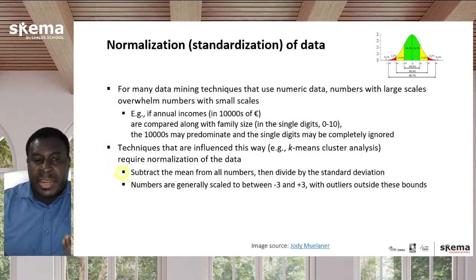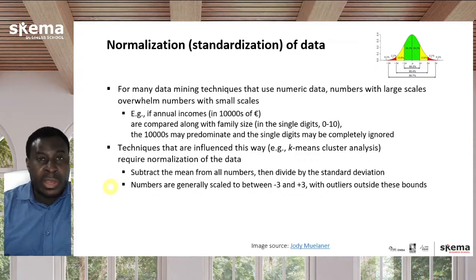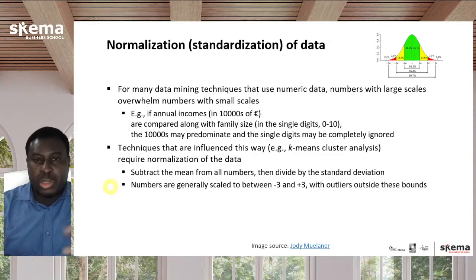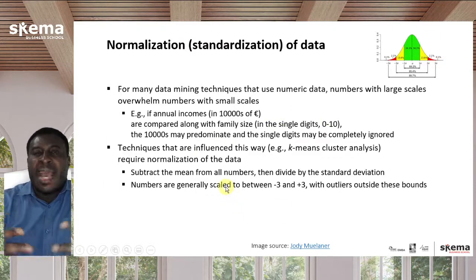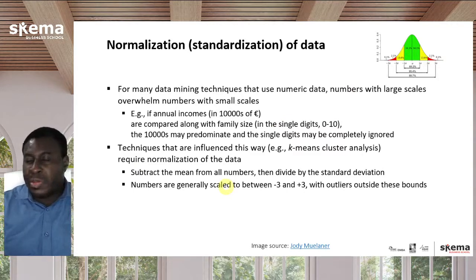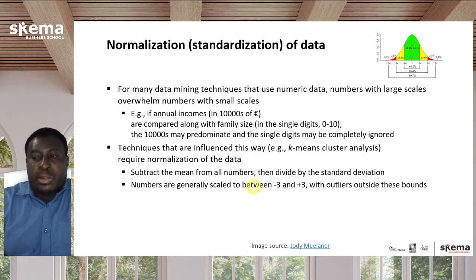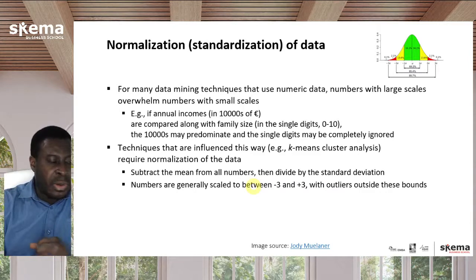The result is that the numbers become scaled to generally from minus 3 to 3, whether you're talking about income or family size. 99% of the data will be within those ranges, minus 3 to 3, assuming you have a Gaussian normal distribution, a bell-shaped curve distribution. Only 1% would be outside of those very extremely high or extremely low values. Since everything is scaled to minus 3 to plus 3, income can now have the same weight as family size, and the algorithm can take all of them into appropriate consideration.